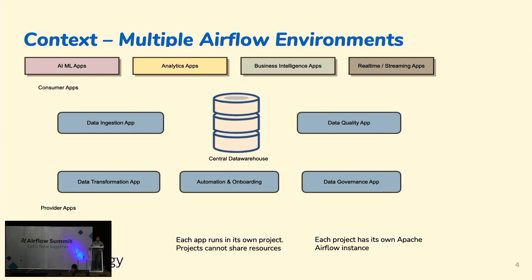These are apps where we run jobs on ingested data — doing some data profiling, rolling up, aggregating data, and giving some good quality metrics. We have a data transformation app that goes to the central data warehouse, joins tables, aggregates tables, and creates insights. The output then goes back to the central data warehouse, so the data warehouse is always connecting with so many apps.